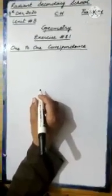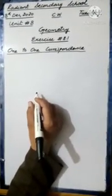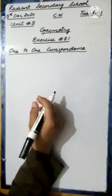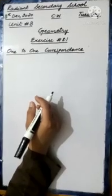The next topic is one-to-one correspondence. When comparing two geometrical figures, we establish one-to-one correspondence between them. For example, placing one block on another: side EG corresponds to side AC, side GH corresponds to side CD, side FH corresponds to side BD, and side EF corresponds to side AB.